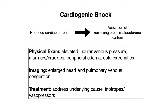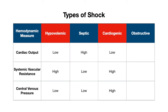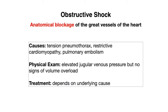On imaging, which you might be shown on a test question, you might see an enlarged heart or pulmonary venous congestion. Treatment involves addressing the underlying cause of cardiogenic shock, as well as administering inotropes or vasopressors if needed to maintain perfusion. In terms of hemodynamics: cardiac output is low, systemic vascular resistance is high due to vasoconstriction, and central venous pressure is high as a result of blood backing up into the venous circulation.